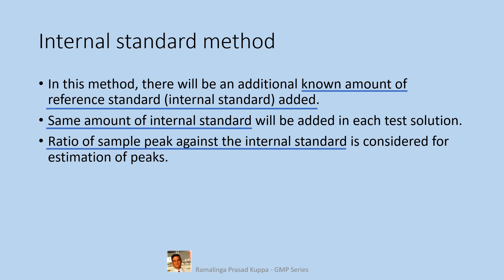The ratio of sample peak against the internal standard is considered for estimation of peaks. Even if there is a variation in area counts, the ratio will be constant. For example, for one injection, the area of the compound peak of interest and the internal standard peak are 100 and 200 respectively — the ratio would be 0.5. By variation in injection volume, the area count values may vary to 120 and 240, but the ratio remains the same at 0.5. This constant ratio is considered for estimation of any peak.